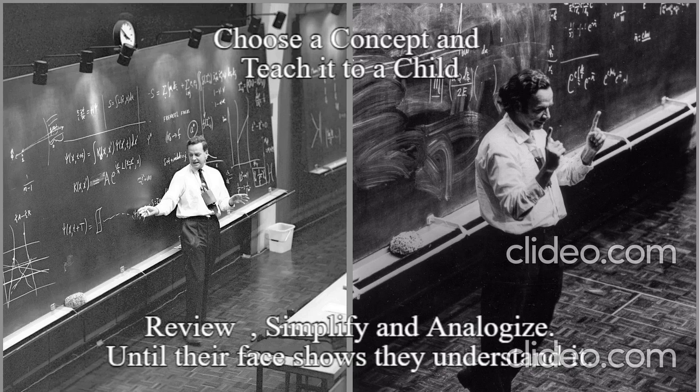So we can control where that signal is strong or weak just by changing how far apart the antennas are. Exactly. And it's not just distance. We can tweak the timing of those signals too, just slightly, and steer that signal wherever we want. We call that adjusting the phase. So with a little wave choreography, we can direct the signal. But where does all this actually show up in real life?